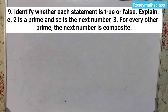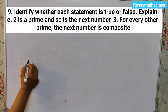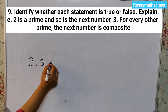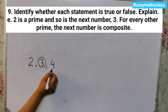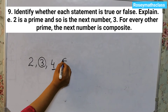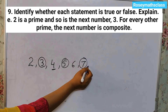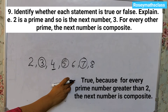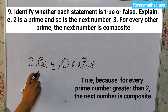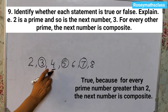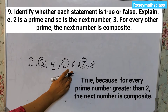Next one: 2 is a prime and so is the next number 3. For every other prime, the next number is composite. The answer is true. Because for all prime numbers greater than 2, the next number is an even number. For example, 3 is prime and 4 is composite. 5 is prime and 6 is composite. 7 is prime and 8 is composite. So all even numbers greater than 2 are composite; therefore after every prime number we have a composite number. The answer is true.